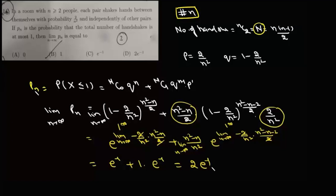We need P(X ≤ 1) = P(X = 0) + P(X = 1). P(X = 0) = NC0 · q^N and P(X = 1) = NC1 · q^(N−1) · p. Substituting, q = 1 − 2/n², so the first term is (1 − 2/n²)^((n²−n)/2) and NC1 = N = (n²−n)/2, giving the second term as (n²−n)/2 · (1 − 2/n²)^((n²−n−2)/2) · (2/n²).